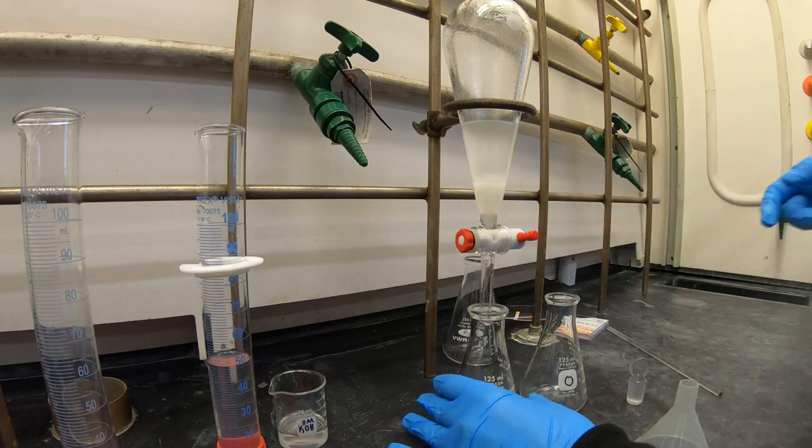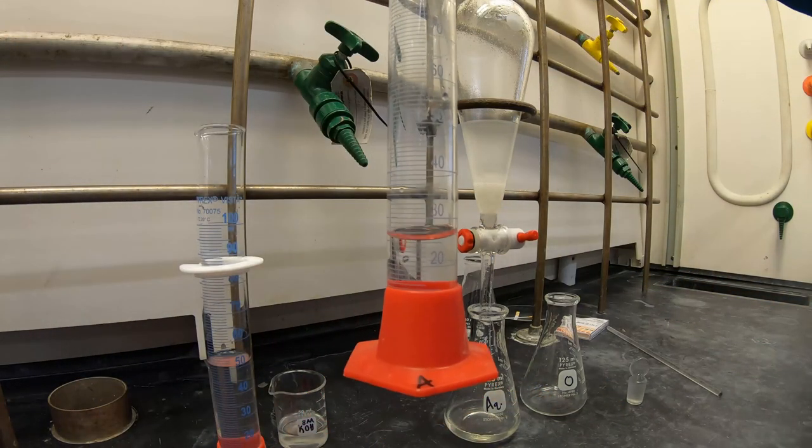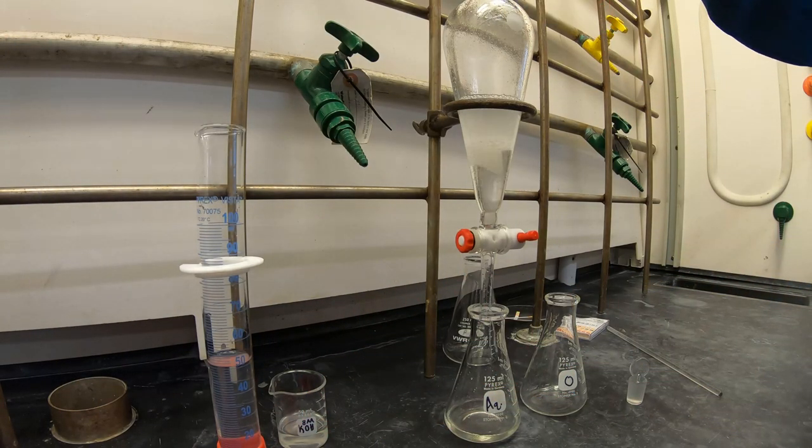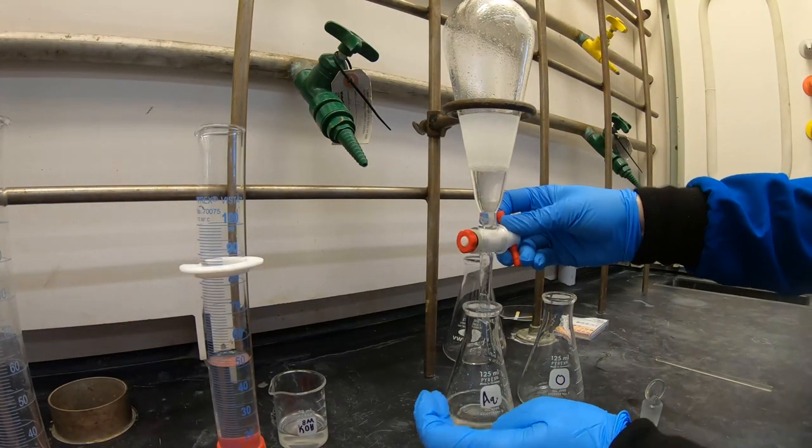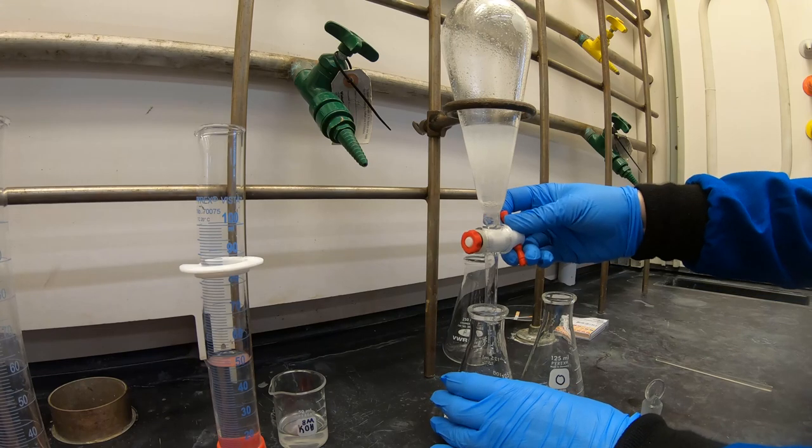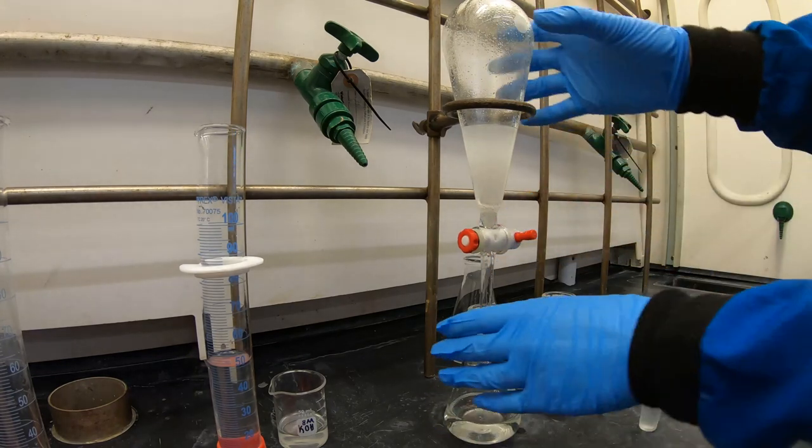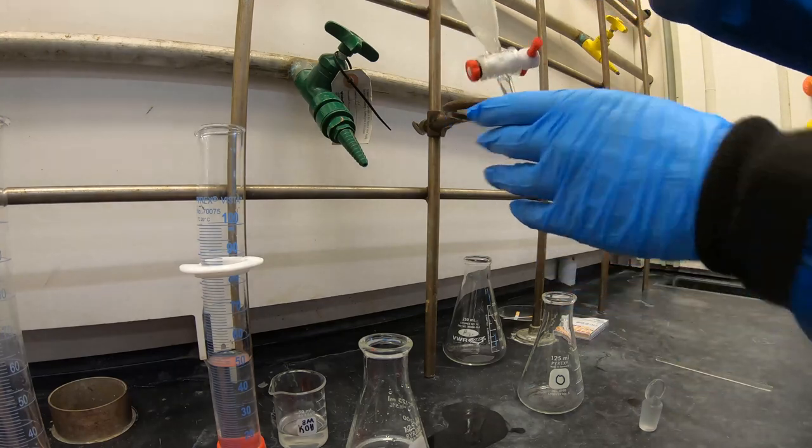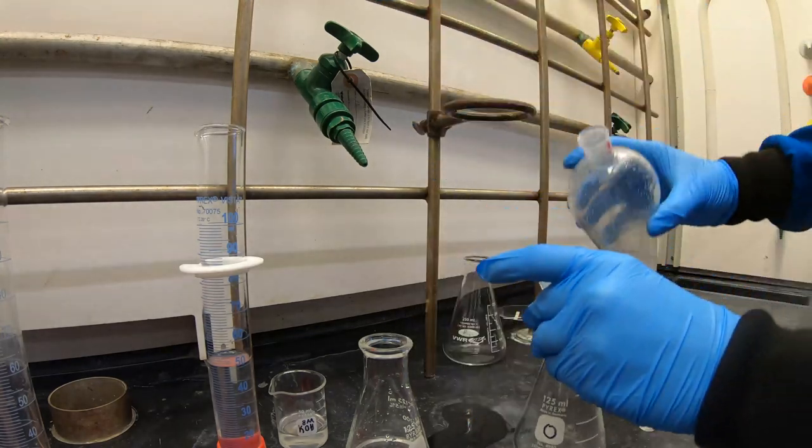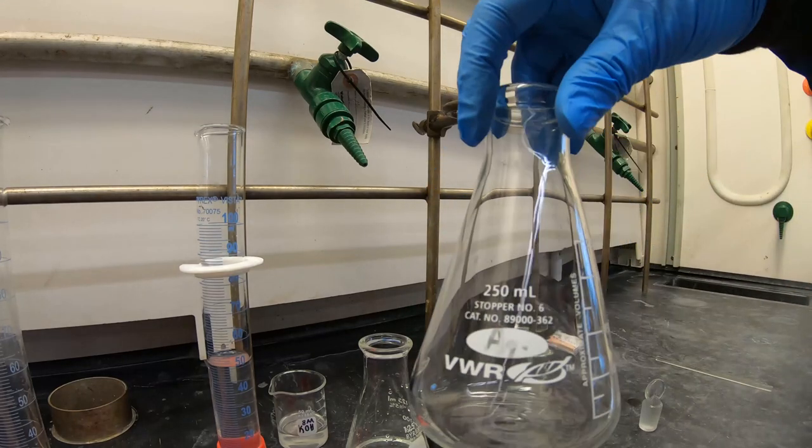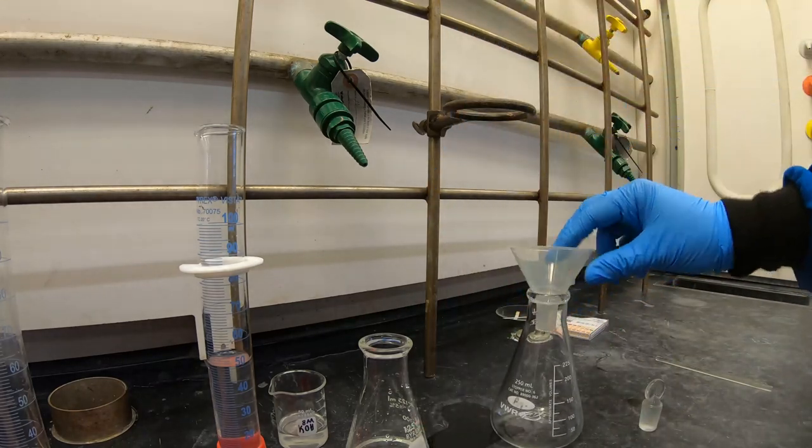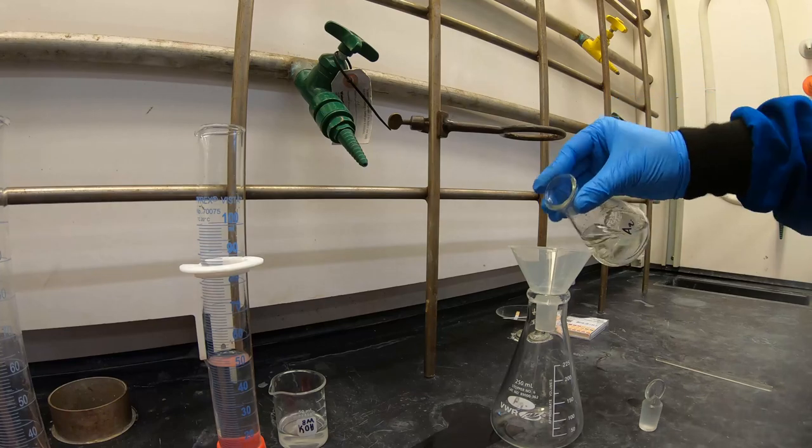After removing the aqueous layer, since toluene is on top, we can leave the organic layer, then add our second portion of HCl directly to the separatory funnel. Transfer your organic layer to its Erlenmeyer flask. Transfer your combined aqueous layers into a 250ml Erlenmeyer flask.